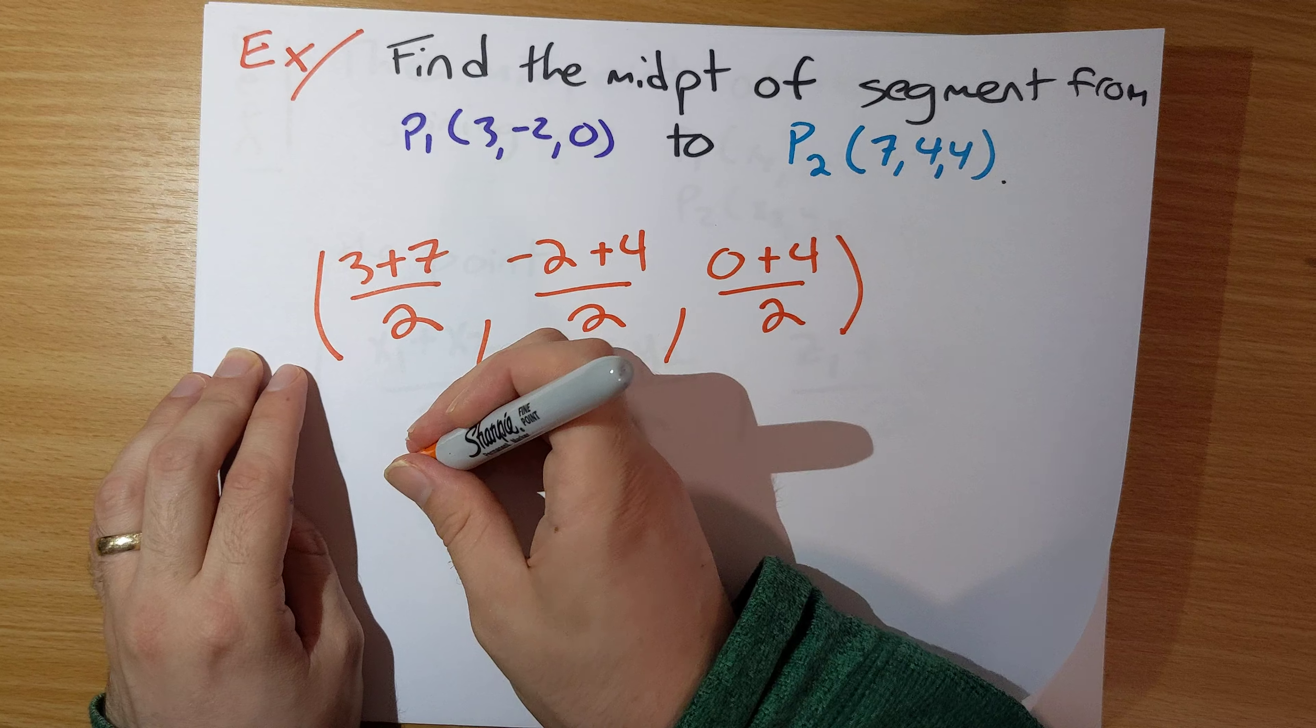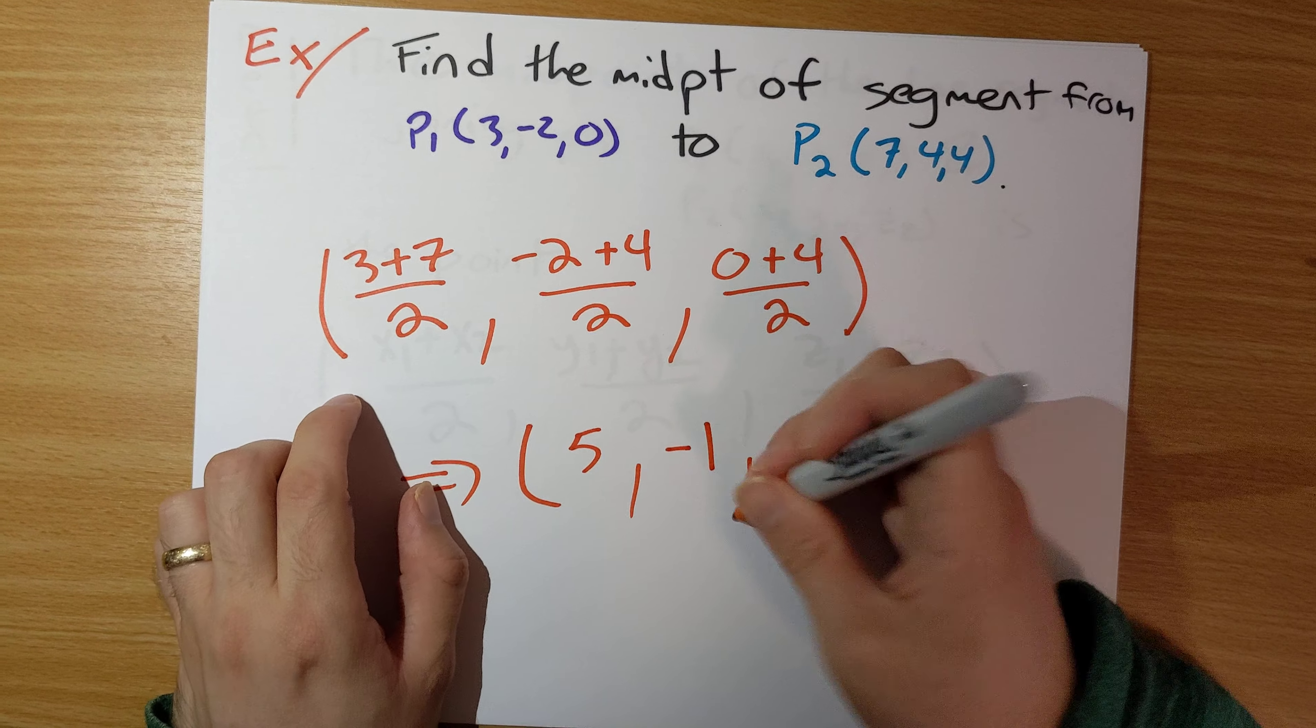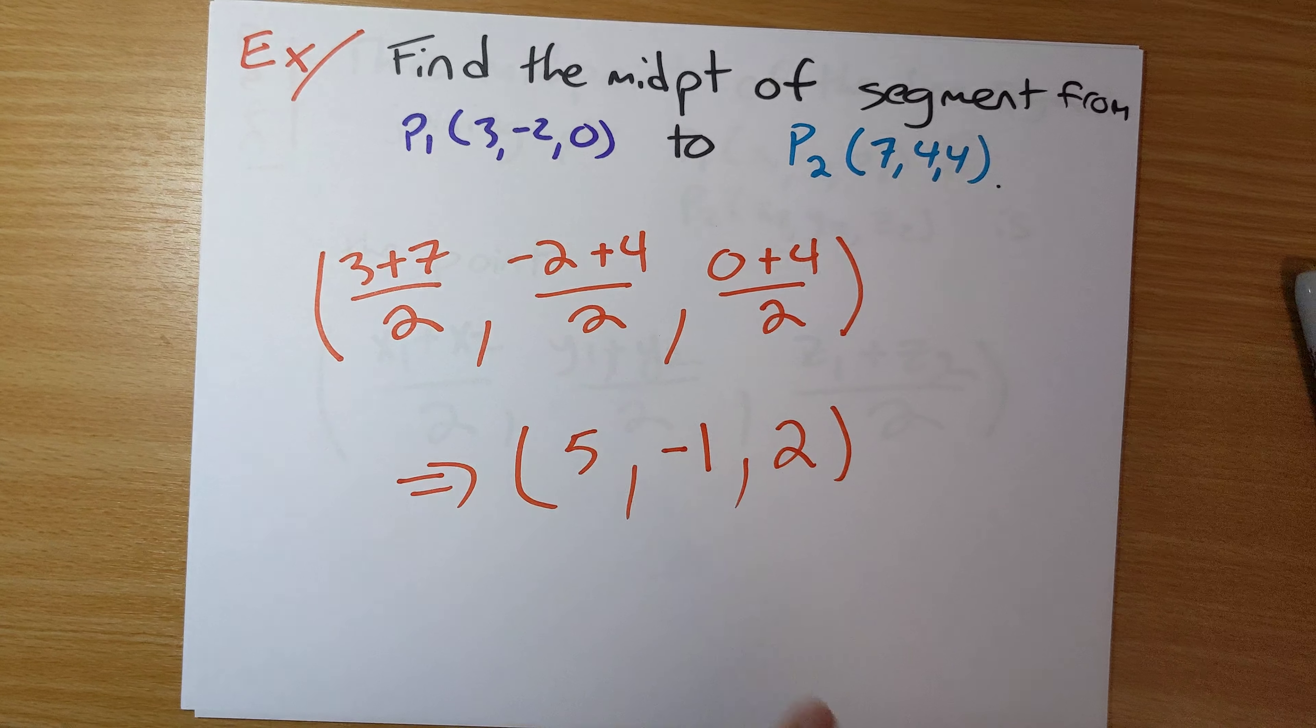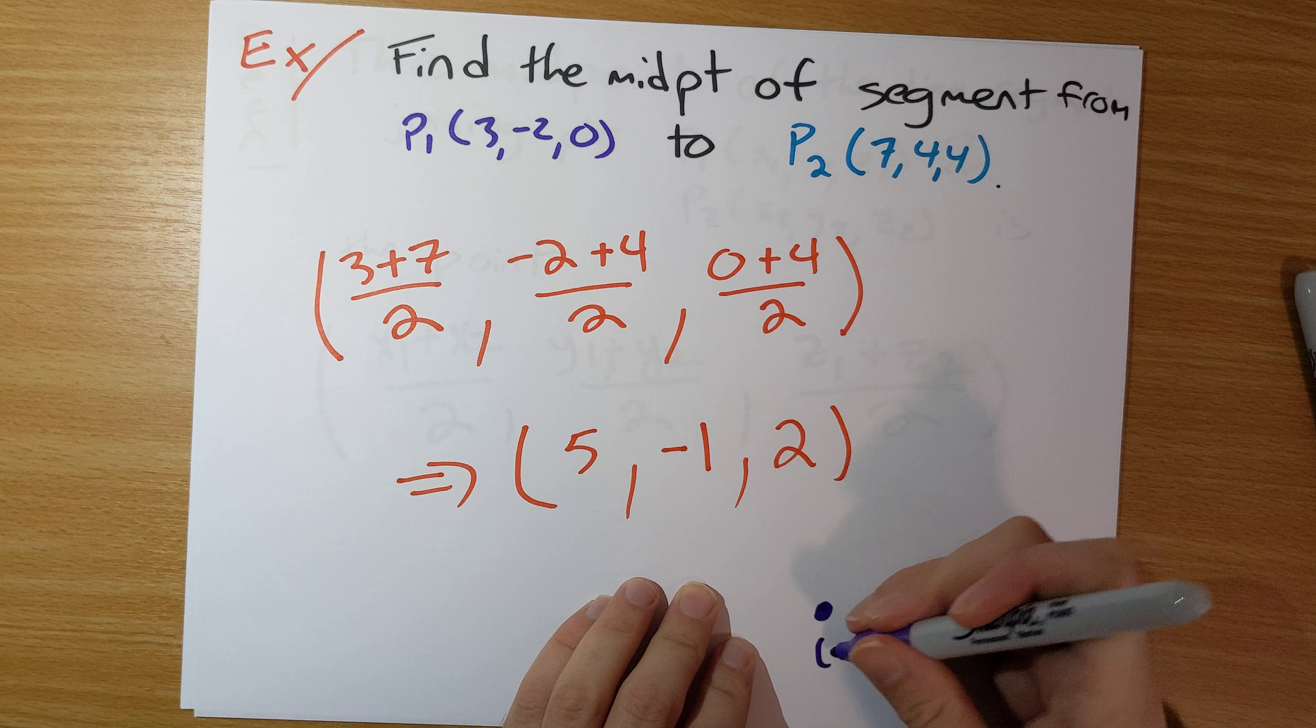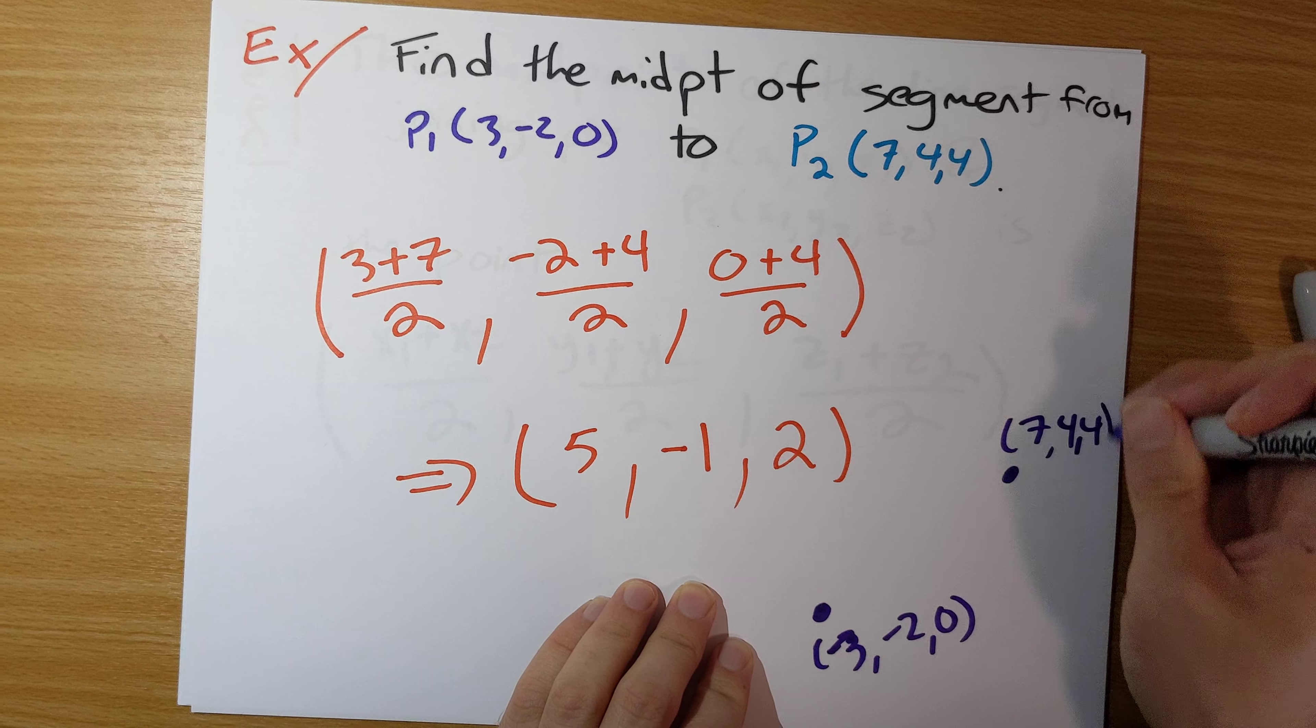And so this ends up as 10 divided by 2 is 5. Negative 2 divided by 2 is negative 1, and 2. So if you are walking from this point here, 3, negative 2, 0, off to the point 7, 4, 4,